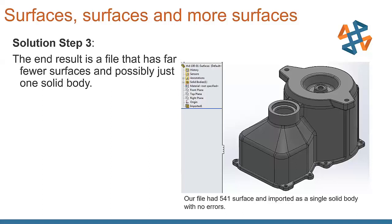What we end up with for our end result is a file that has far fewer surfaces and possibly just one solid body. In the case of our part here, this one works out pretty good. Our file had 541 surfaces. We round tripped it like that and we came back as an imported single solid body with no errors. So not all of them turn out that cleanly, but it gives you a lot more to work with at that point if you only have to go in and clean up a few faces by the time it's all said and done. Neat way to be able to do that.